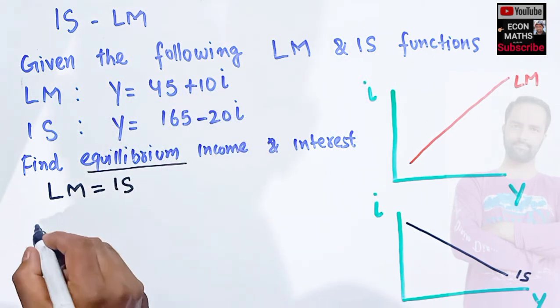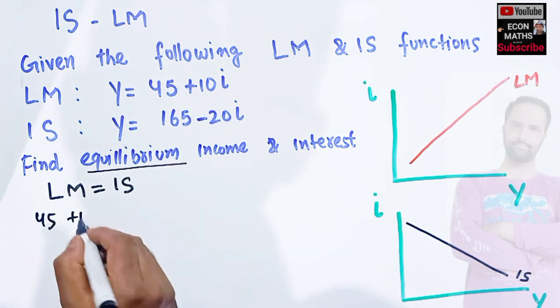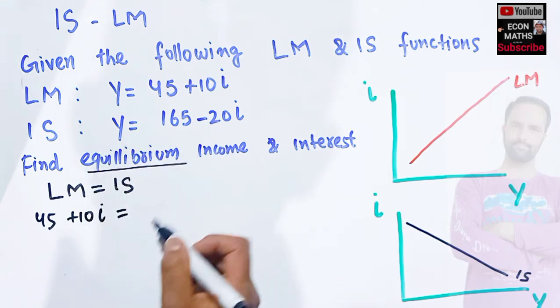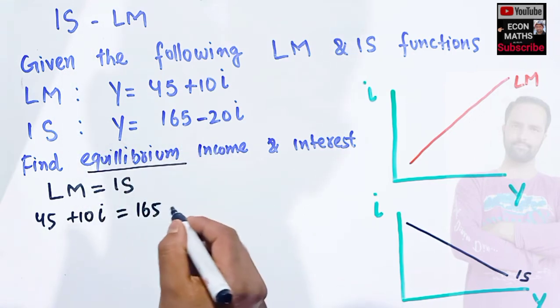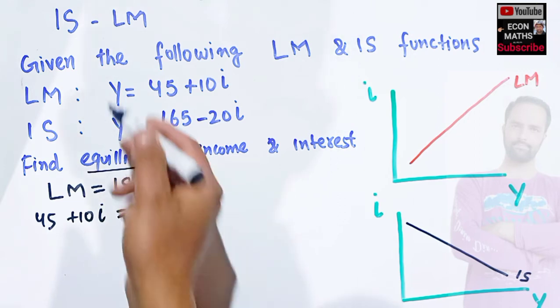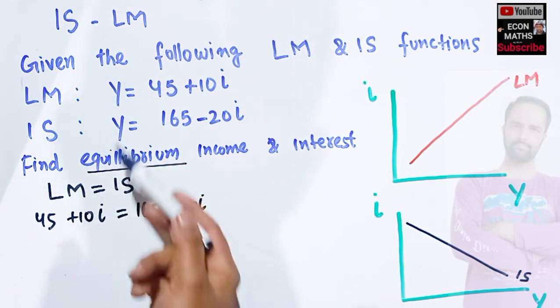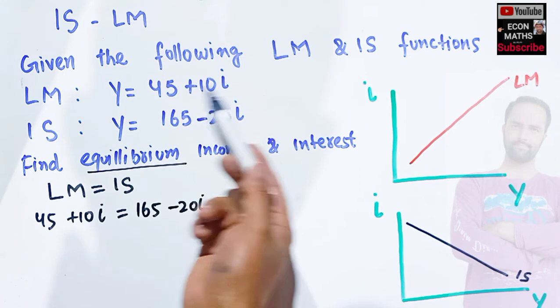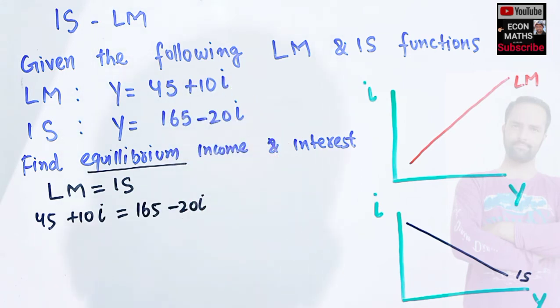so I can write 45 + 10i should be equal to 165 - 20i, because we have the same Y on both sides, so we can equate the right hand sides here. Solving for i here, this becomes 30i